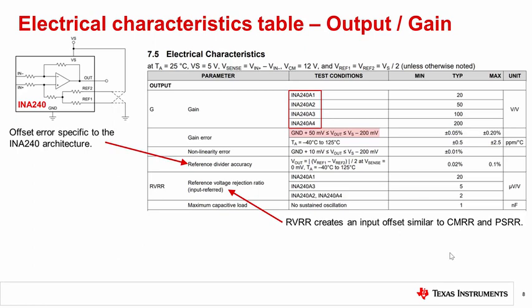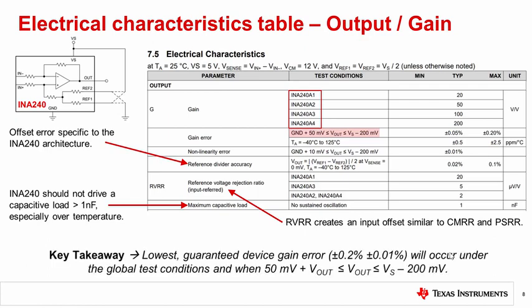Lastly, a common spec for many CSAs is the maximum capacitive load with no sustained oscillation, which says that the INA240 should not drive a purely capacitive load greater than 1 nF, especially over temperature. Once again, a key takeaway when studying these specs is that the lowest guaranteed gain error will occur when the device is operating under its testing conditions, which include the global and that the Vout is within its specified range.